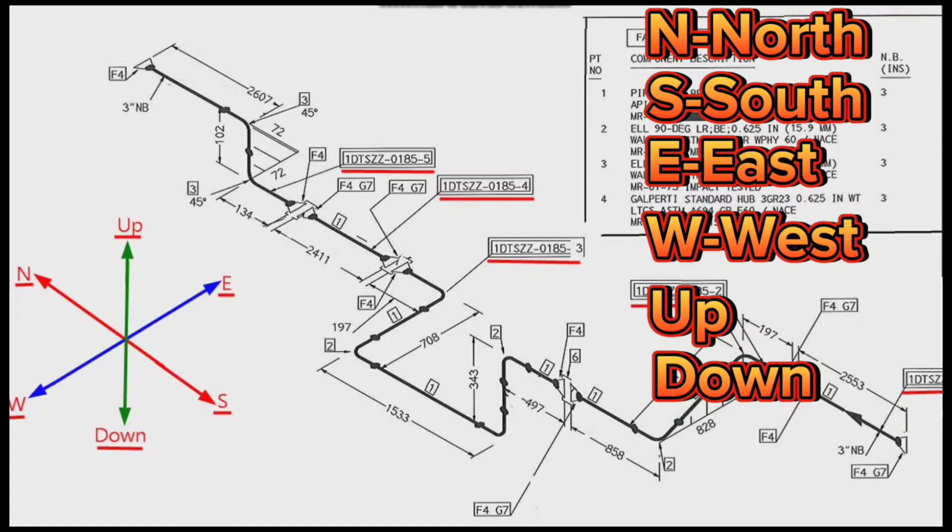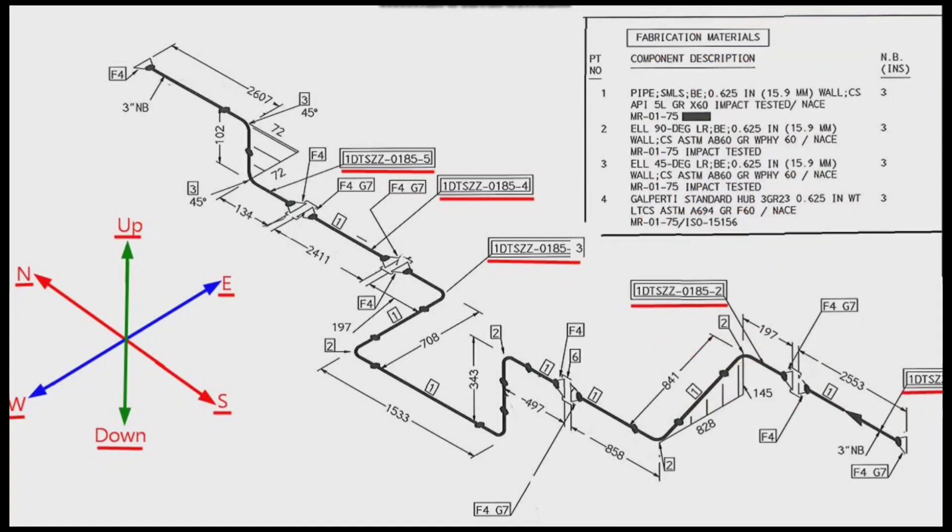Let's try to read this pipe isometric using these directions. We will start reading the pipe isometric from this point because the direction of the arrow on the pipe drawing is in this direction.